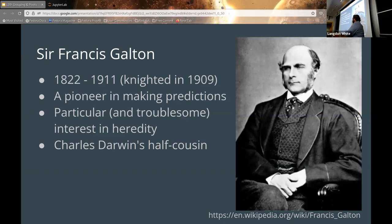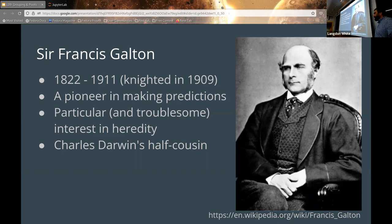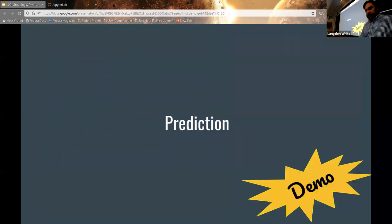He was also interestingly Charles Darwin's half cousin. If you want to know more about him and why some of his beliefs are questionable, go read his Wikipedia page and take it with a grain of salt. So that's him, and we're going to talk about prediction.